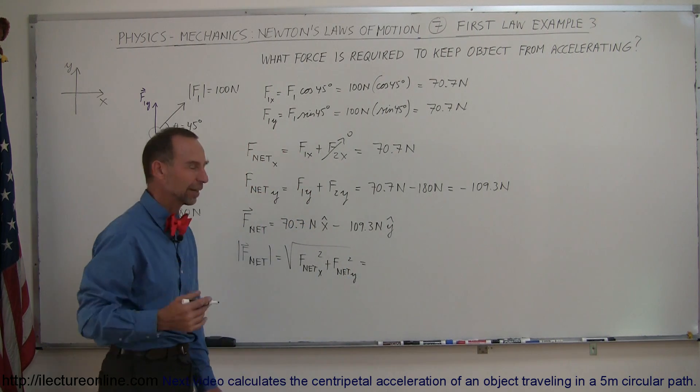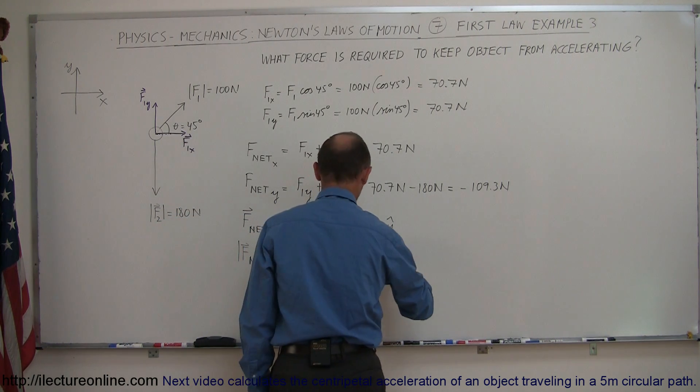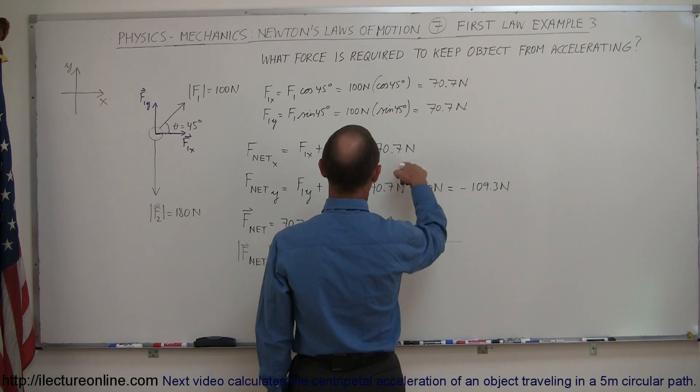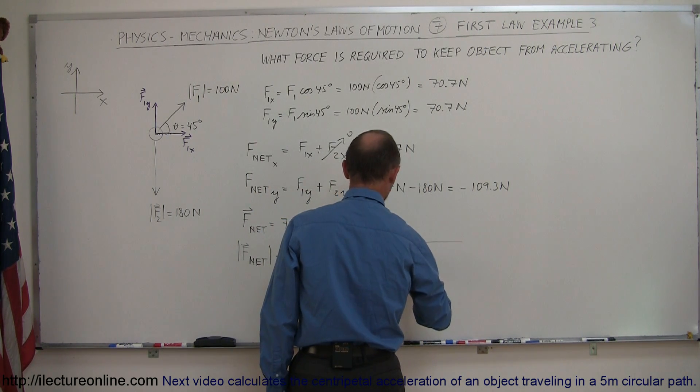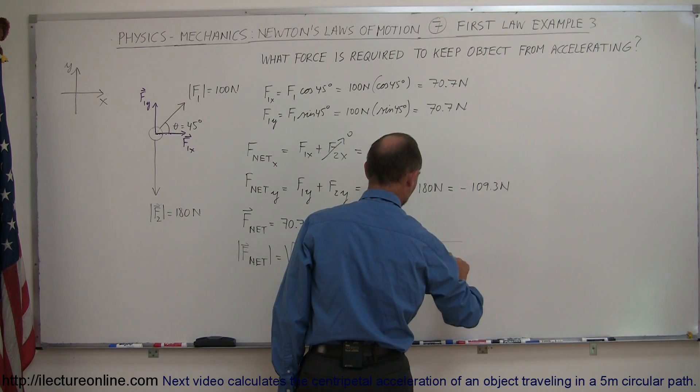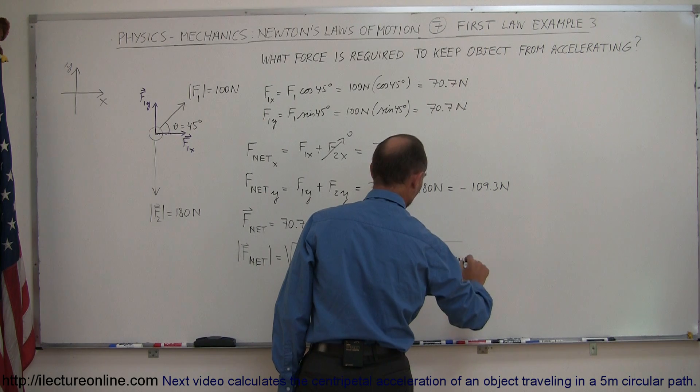So that's using Pythagorean theorem to find the magnitude. So it's equal to the square root of the X direction. Let's see, right here that would be 70.7 Newtons. We have to square that plus the Y direction minus 109.3 Newtons squared.